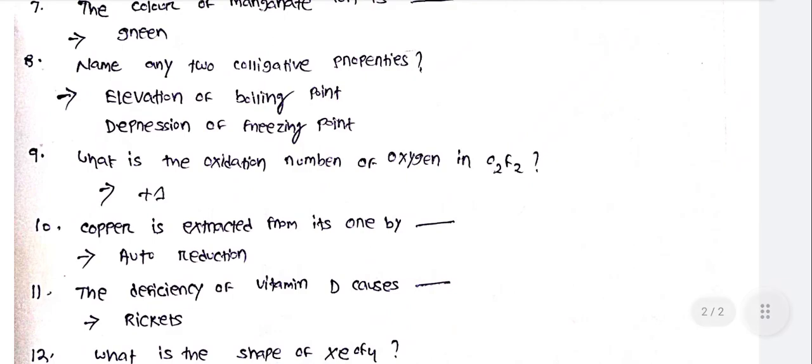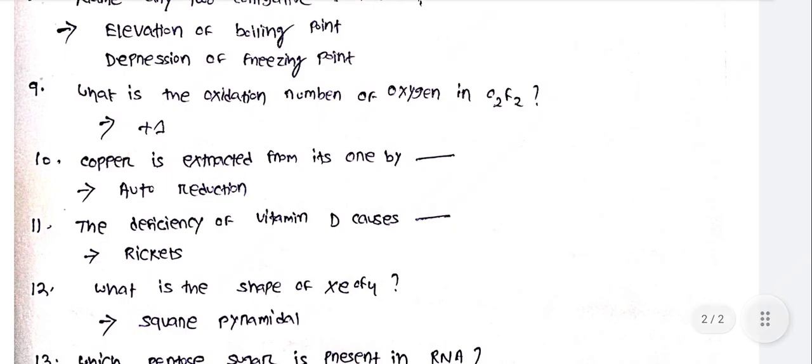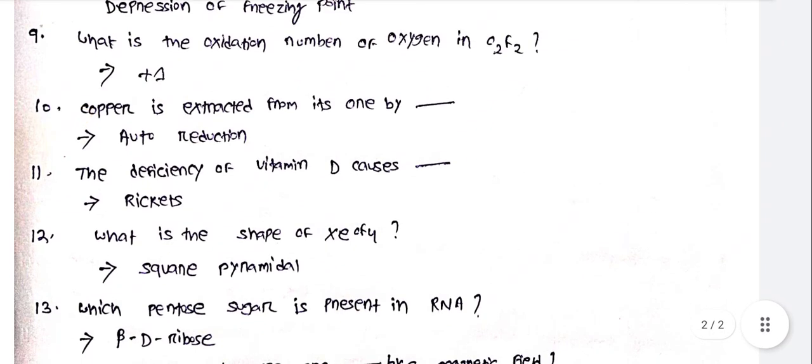What is the oxidation number of oxygen in O₂F₂? Plus 1. Copper is extracted from its ore by auto-reduction. The deficiency of vitamin D causes rickets. Vitamin C deficiency causes scurvy (ascorbic acid deficiency). Vitamin A causes night blindness.